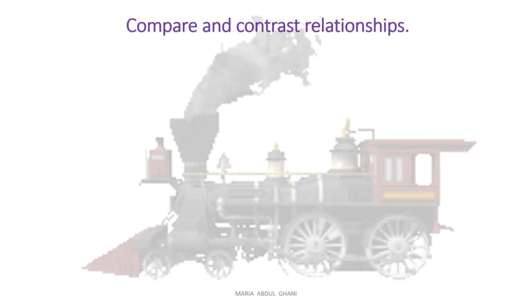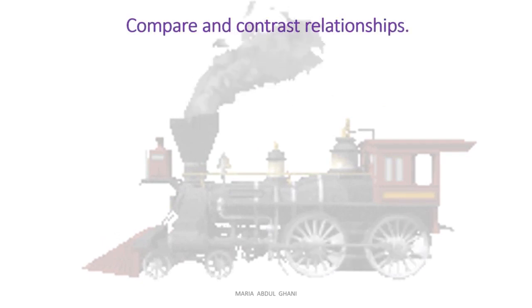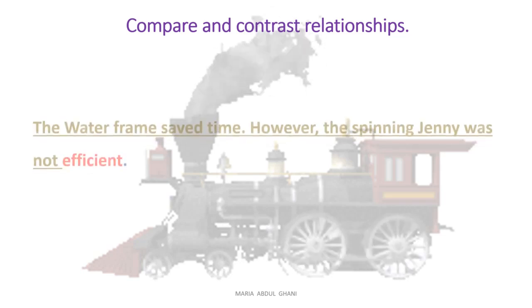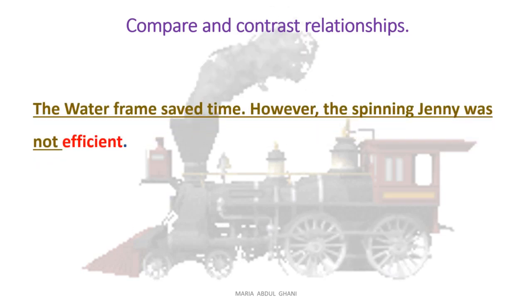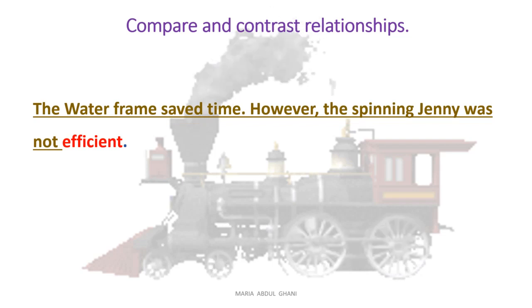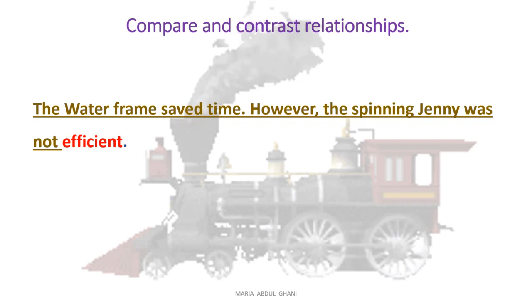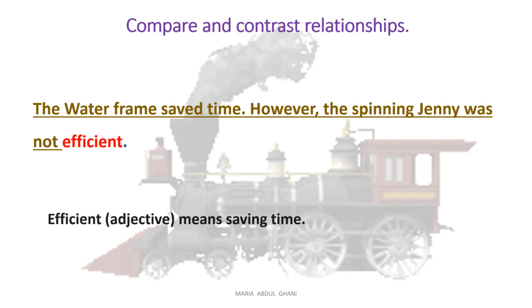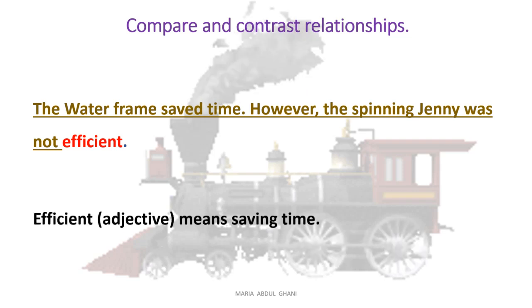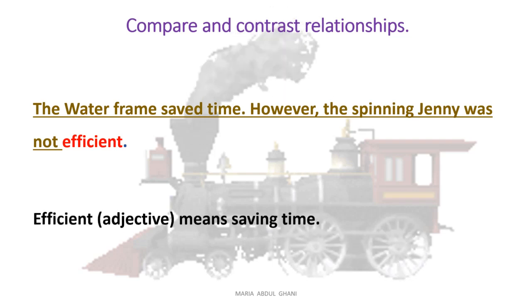Compare and contrast relationships. For example: 'The water frame saved time. However, the spinning jenny was not efficient.' Efficient is an adjective and means saving time.